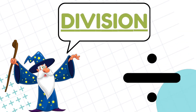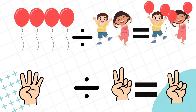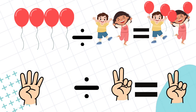This is the sign of division. Let's take another example. There are four balloons. How will you share four balloons with your two friends? Four balloons divided by two friends — that is four divided by two equals two. Each will get two balloons.